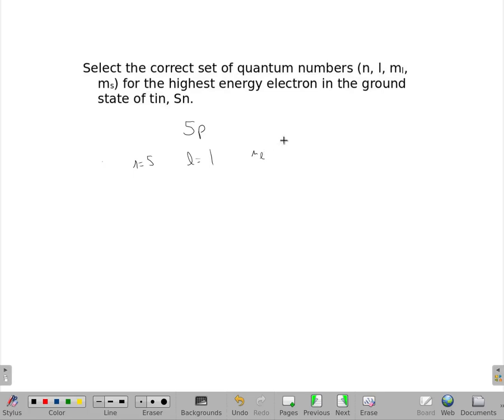Our m sub l has three possible values. It could be negative l, which is negative 1, it could be 0, or it could be positive l, which is 1.